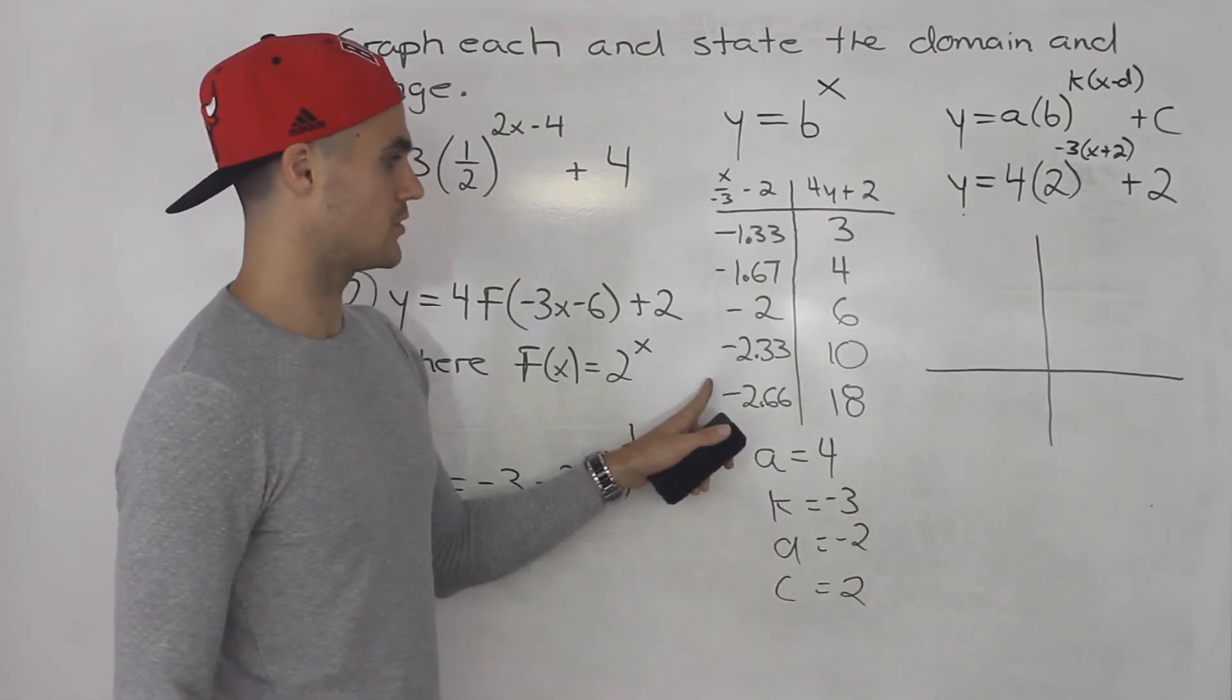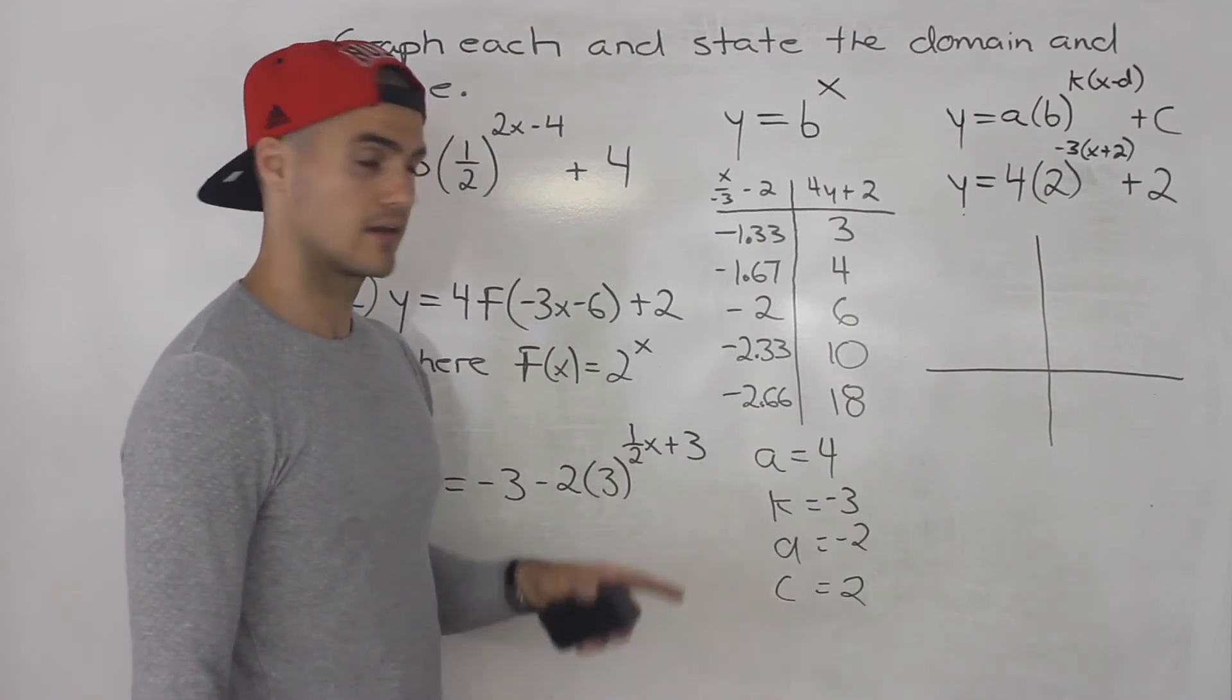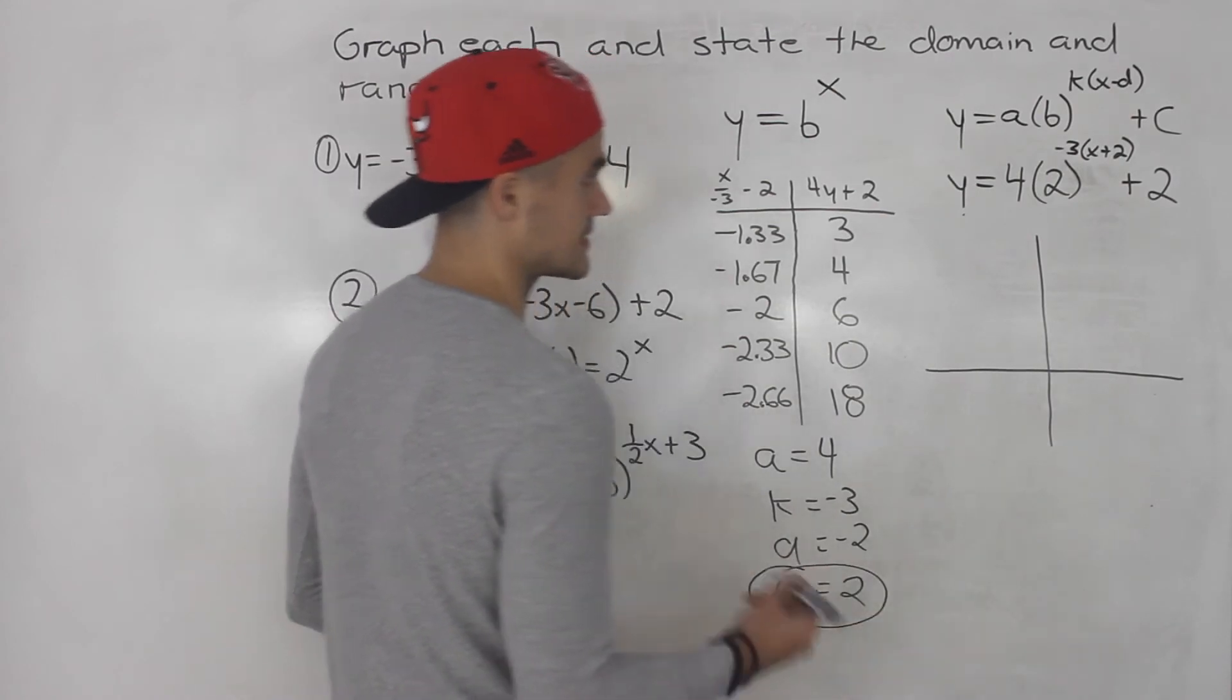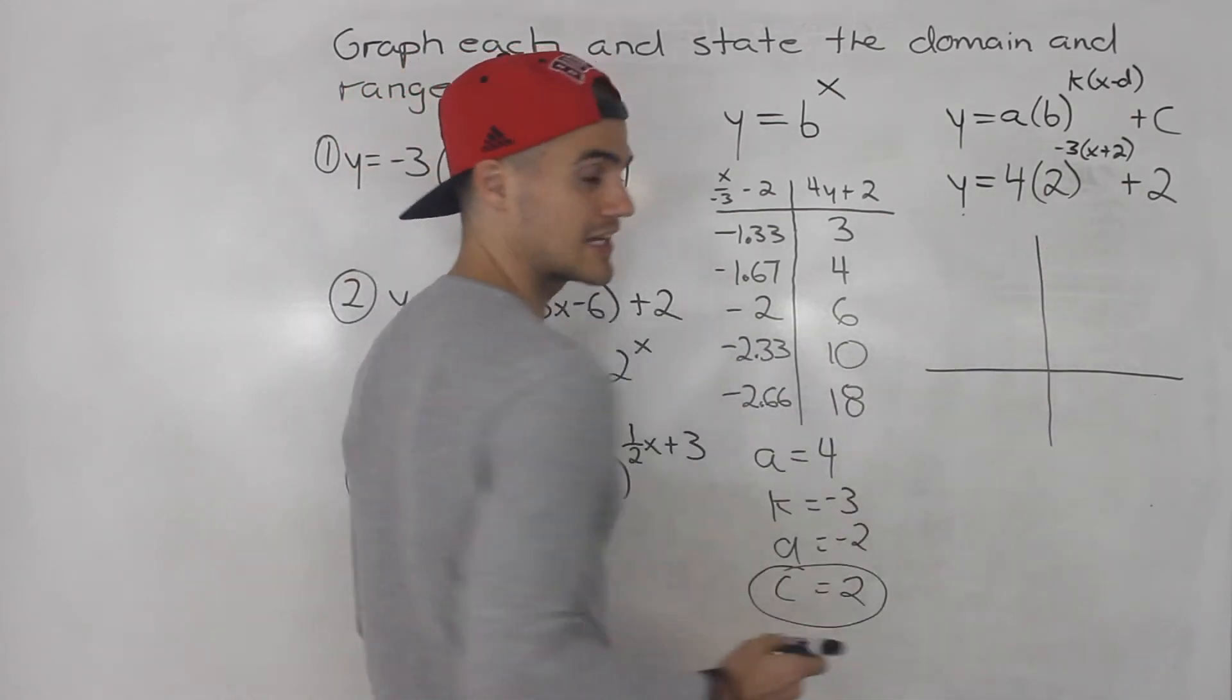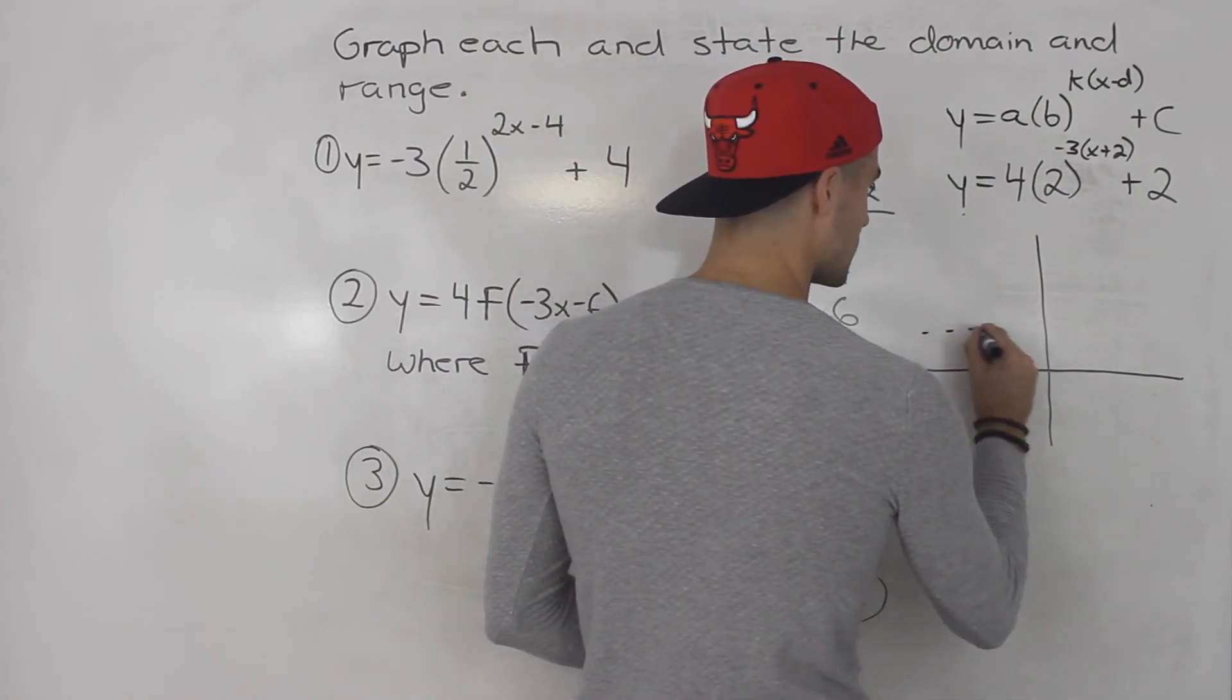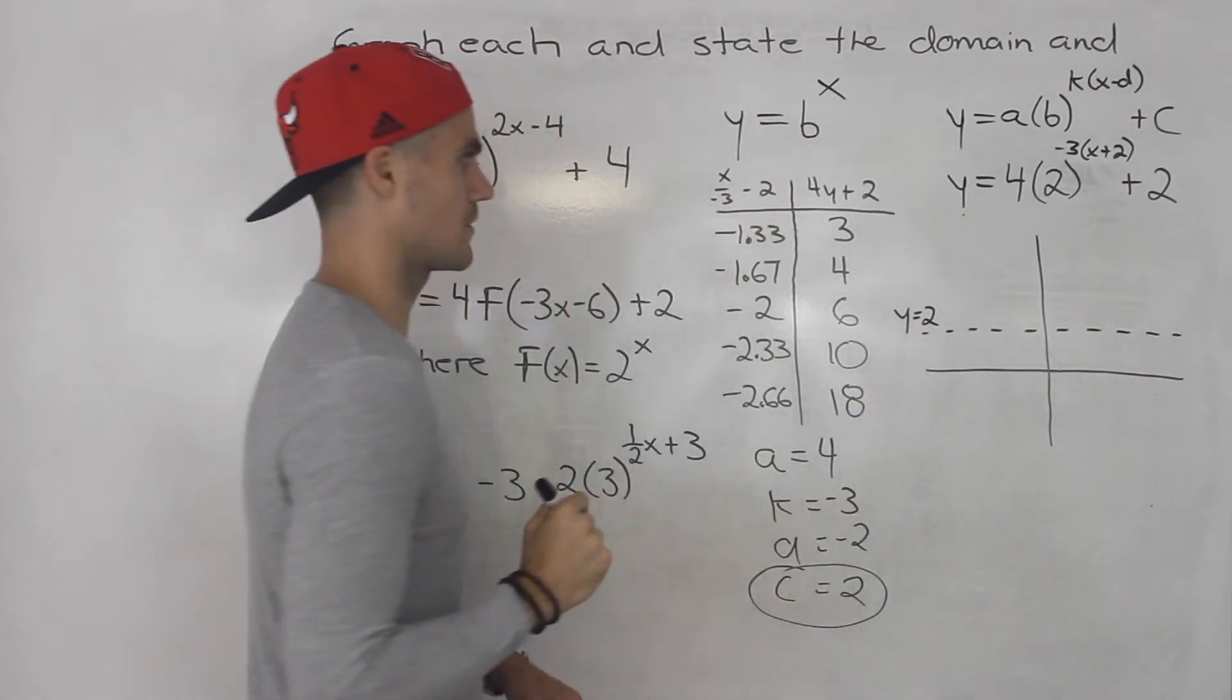So I rewrote this table over here and I'm going to plot the points and then these are the transformation values. Remember first step, that c value in this case is 2, meaning that there's going to be a horizontal asymptote at y is equal to 2. You always want to draw that first just to give you a reference to work from.